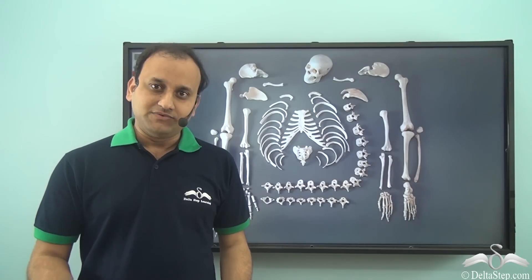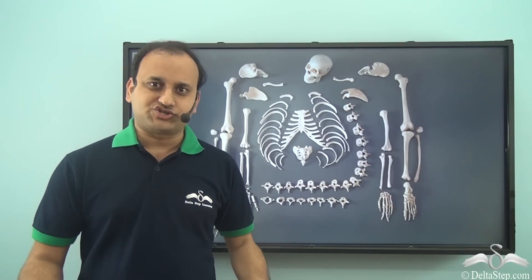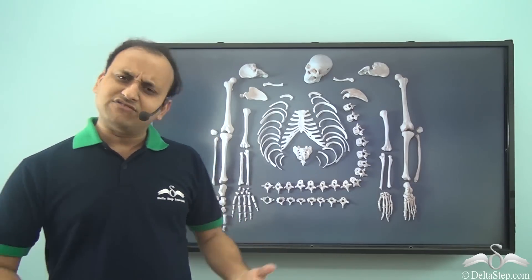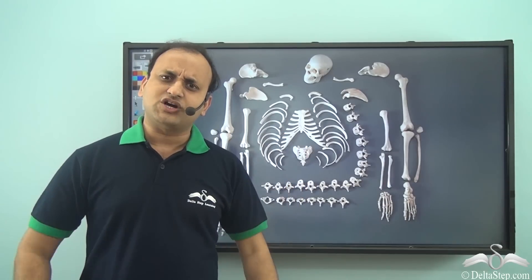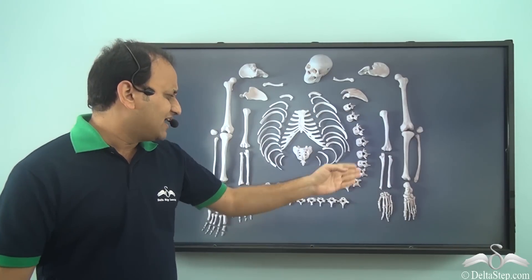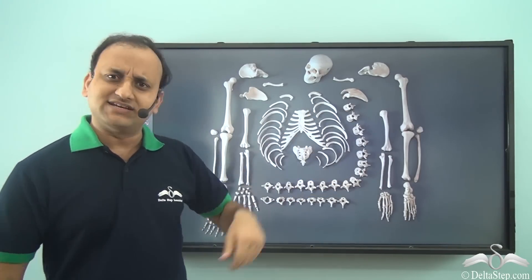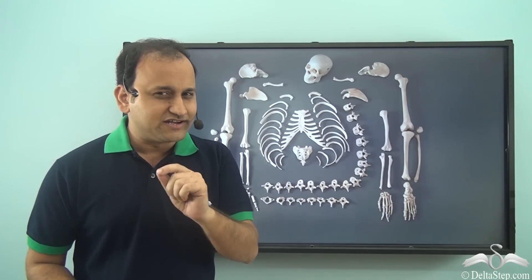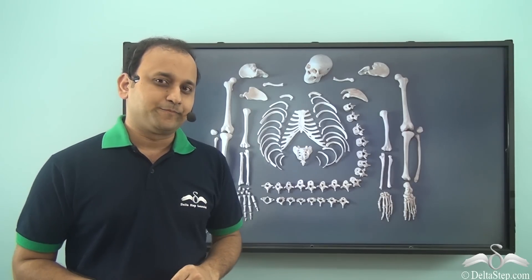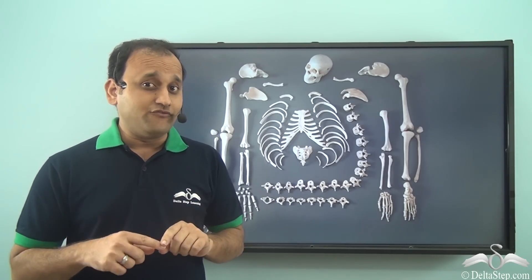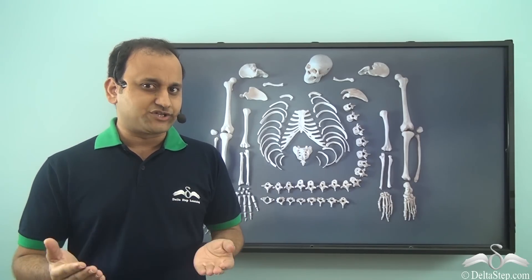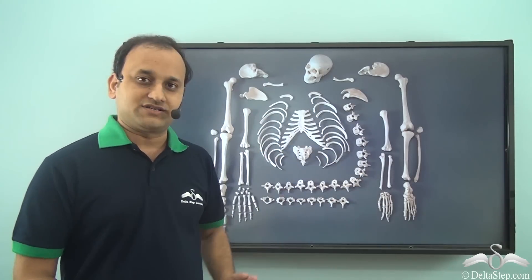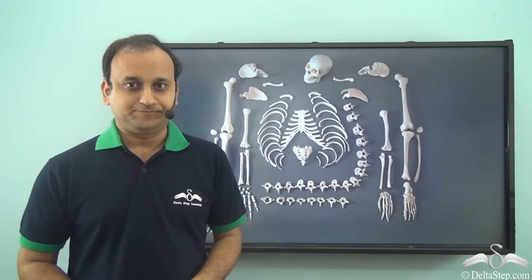The main purpose of the skeletal system is to provide structure and strength. So why can't we have a single structure without any joints and such complexity? There is a particular reason behind it. Let's look at a structure in which we don't have so many different parts — a single structure.